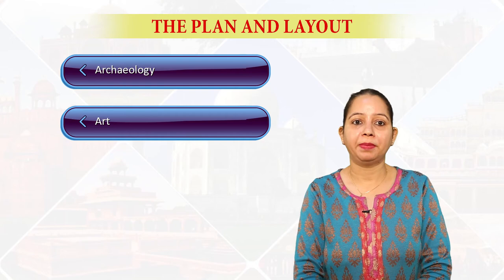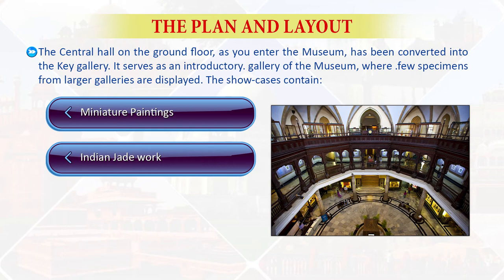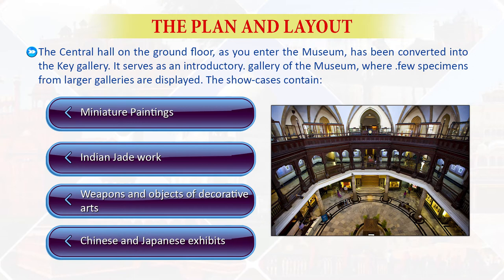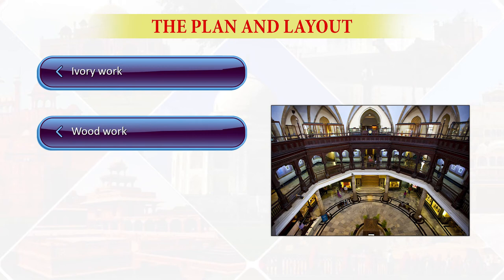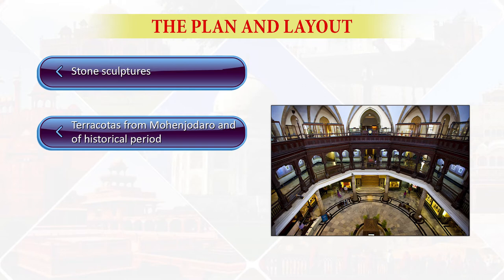The collection at the museum has been classified into four main sections: archaeology, art, painting, and natural history. The central hall on the ground floor has been converted into the key gallery, serving as an introductory gallery where few specimens from the larger galleries are displayed. The showcases contain miniature paintings, Indian inlaid work, weapons, objects of decorative arts, Chinese and Japanese exhibits, ivory work, woodwork, Akhnur terracottas, colored tiles, stone sculptures, terracottas from Mohenjo-daro, Indian bronzes, and Mirpur Khas terracottas.